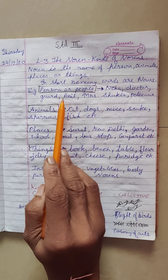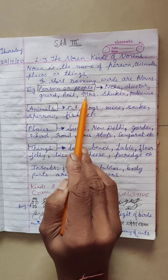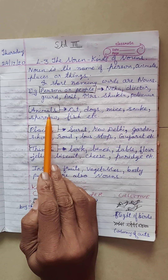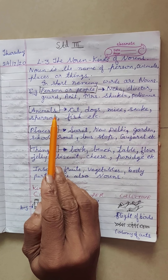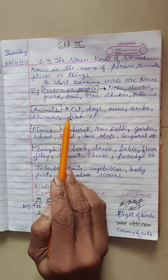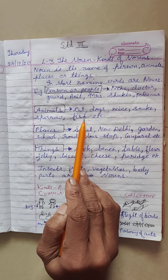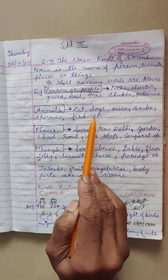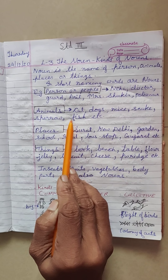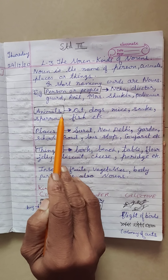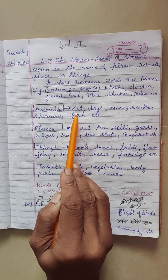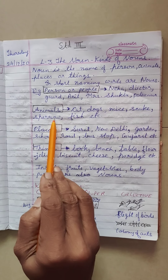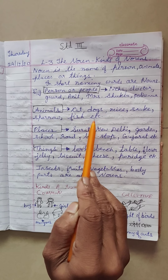Animals includes boat animals, water animals, sea animals, reptiles, mammals, birds names. All these are animals only. Examples: cat, dogs, mice, snake, sparrow, fish etc.